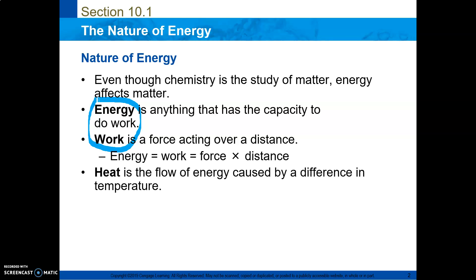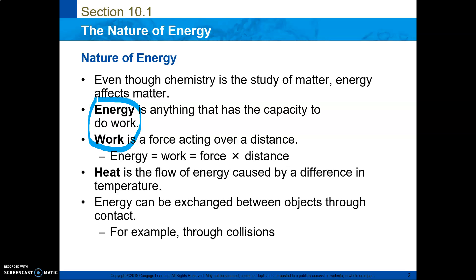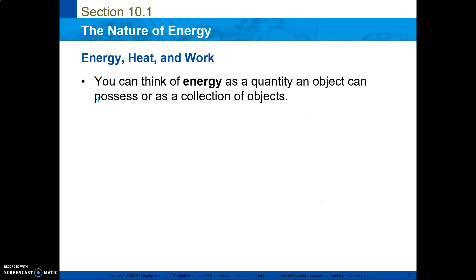Heat is a flow of energy caused by the difference in temperature. Energy can be exchanged between objects through contact. For example, if I have a pan on my stove, the stove is warm and it exchanges heat, so the pan was cool and then it heated up the bottom of my pan through the stove. You can think of energy as a quantity an object can possess because of the objects that are colliding with each other.